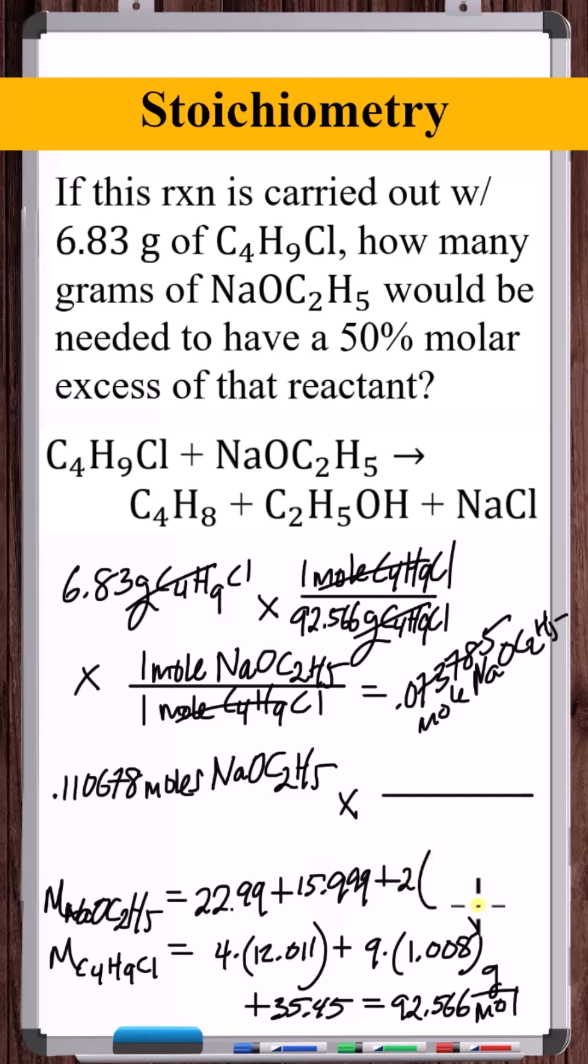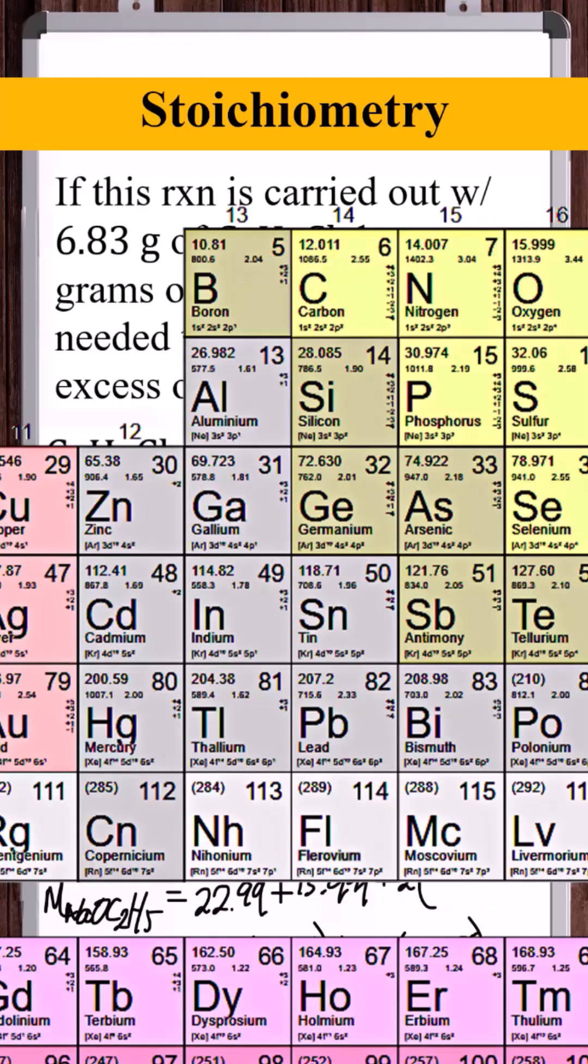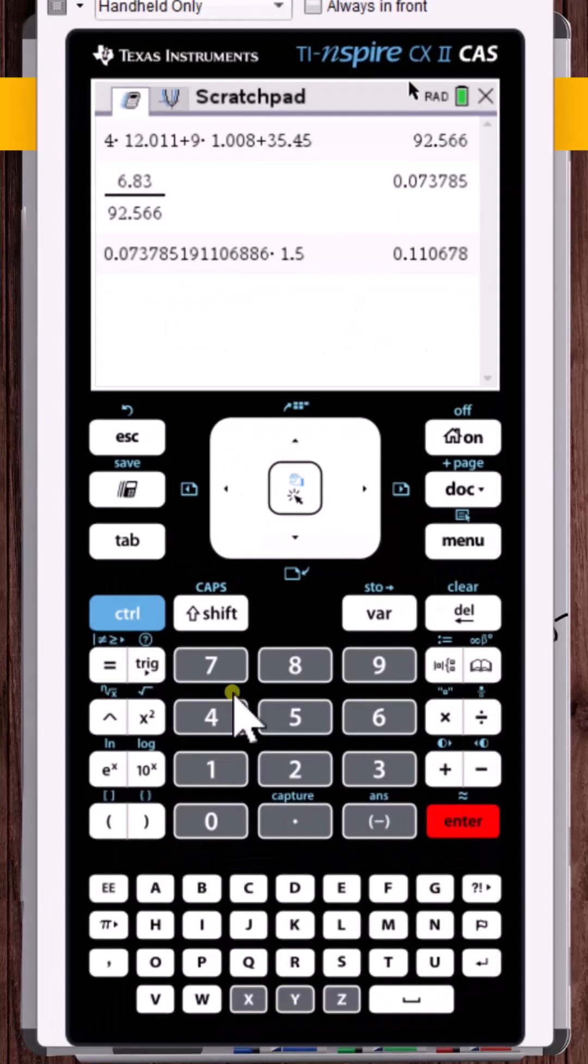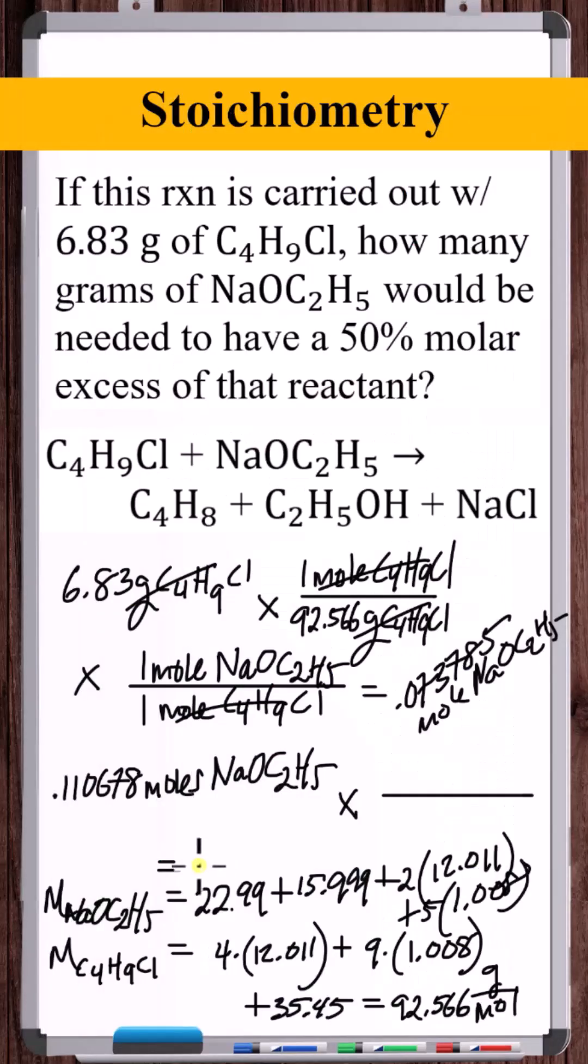Two carbon atoms, molar mass of carbon 12.011 times 2, and five hydrogen atoms, 1.008. So this is 68.051.